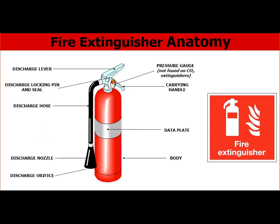Let's talk about a typical fire extinguisher's anatomy. The most important one is the discharge lever — it helps to start and control the discharge of an agent from the extinguisher. There should also be a locking pin or seal to avoid accidental discharge of the agent. The carrying handle is used to carry the extinguisher easily and sometimes for mounting purposes.